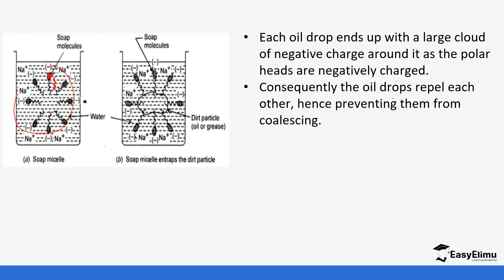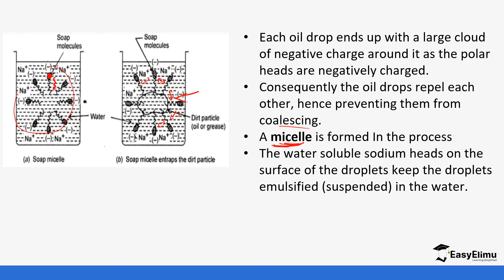Consequently, the oil drops repel each other, as you can see, hence preventing them from coalescing. Because they are not able to attract each other—remember, they are of like poles—they are not going to attract each other; they repel. Because of this attraction, they are forming a sort of round cloud around the oil. This is what we refer to as a micelle. The water-soluble sodium heads on the surface of the droplets keep the droplets suspended in the water. When the water is being rinsed, the water carries away those oil droplets. This micelle is the one that is removed when rinsing occurs.